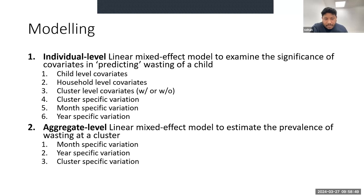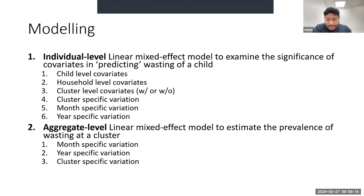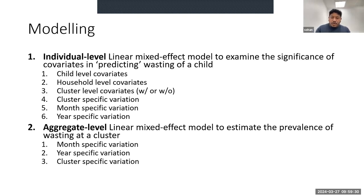I'll walk through the modelling we did and the results. As Kerry pointed out, we have quite granular data at the child level — for each child we know certain parameters including household parameters and cluster level parameters. We wanted to use those data to answer two questions: first, is there seasonality present in wasting prevalence? And second, can we correct for that seasonality? That's why we worked on two separate models, mostly focusing on the individual level model and then the aggregate level model, with a follow-on project exploring that further.